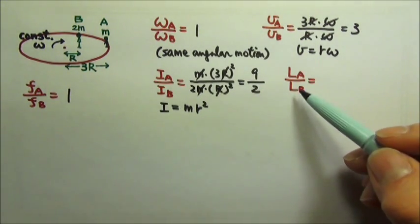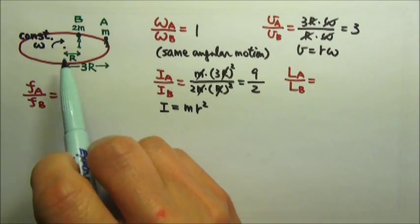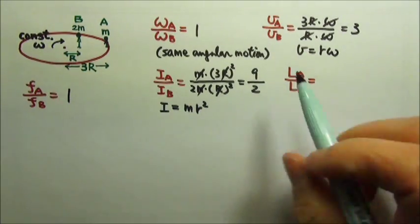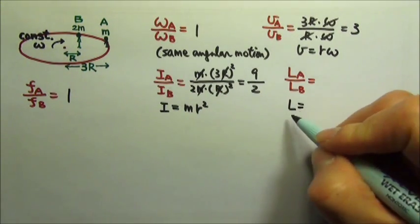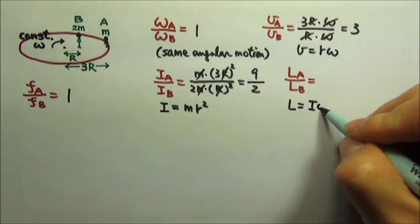For the angular momentum, because I already have the I and I know they have the same omega, for this case it's probably easier to use L equals I omega.